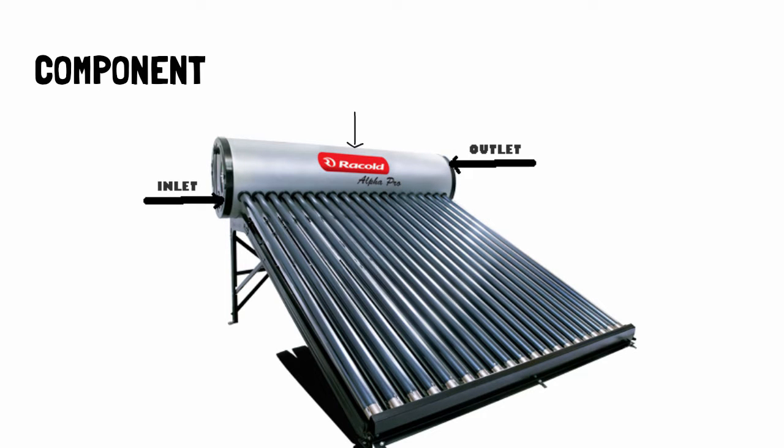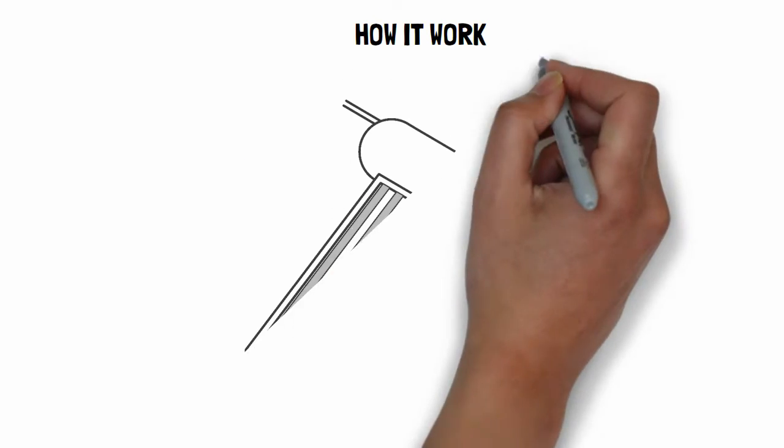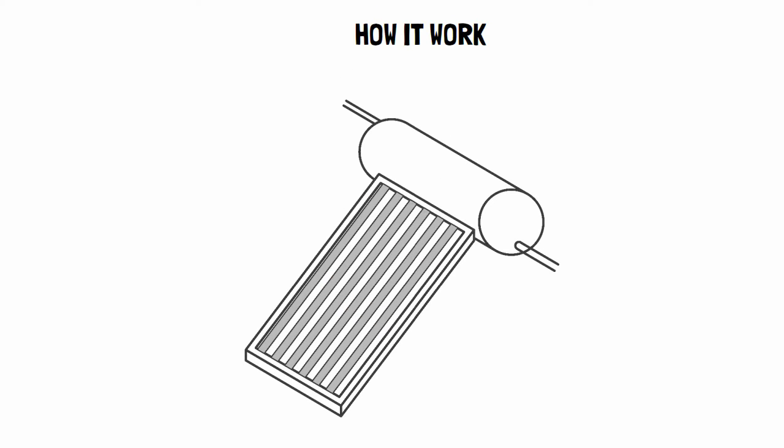The solar collector is where the water is heated. Cold water from the overhead tank is inlet in the lower part of the storage tank. From the tank, cold water is run to the number of tubes in the solar collector.